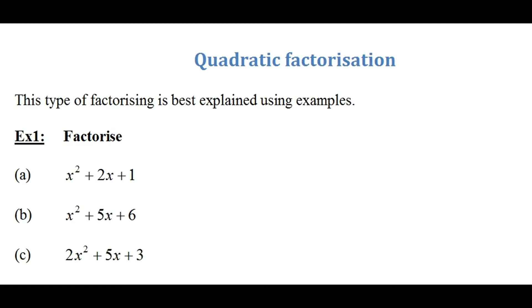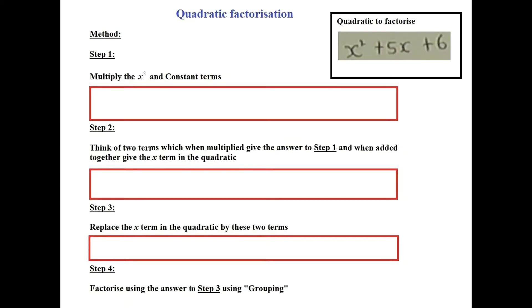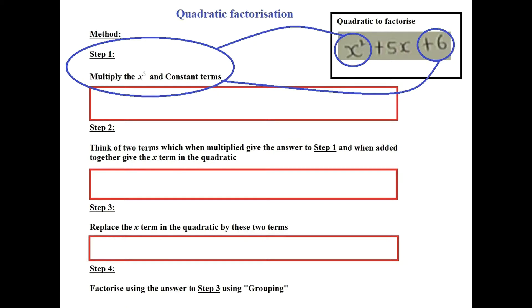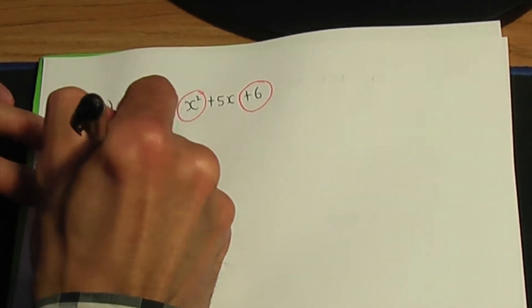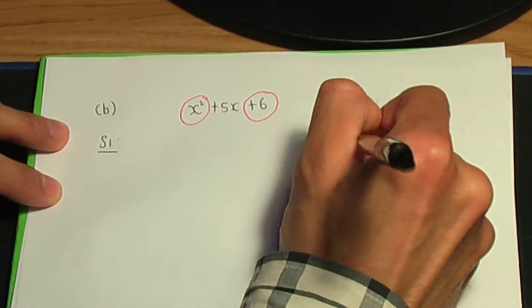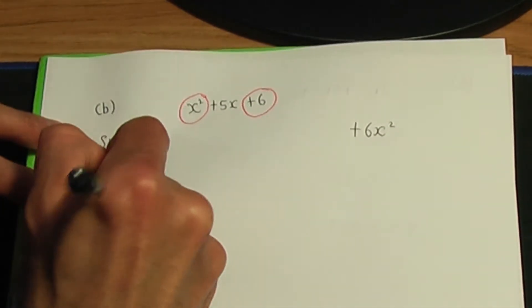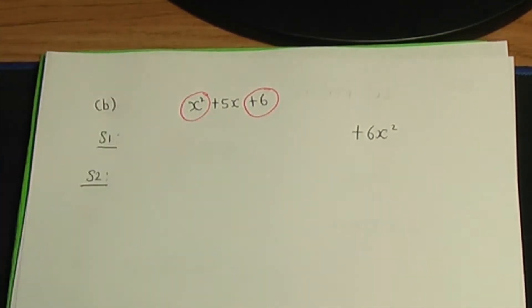Example 1b: let's factorise x squared plus 5x plus 6 in the same way. Step number 1 is to multiply the x squared and constant terms together. The x squared term times plus 6 gives plus 6x squared.